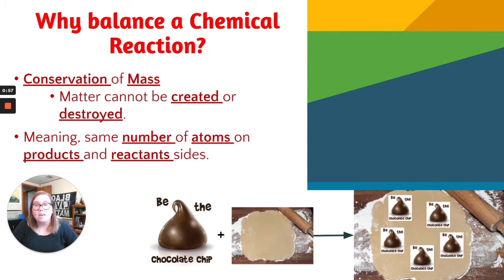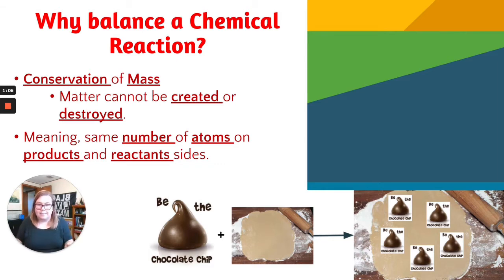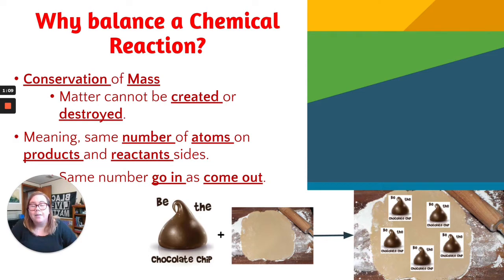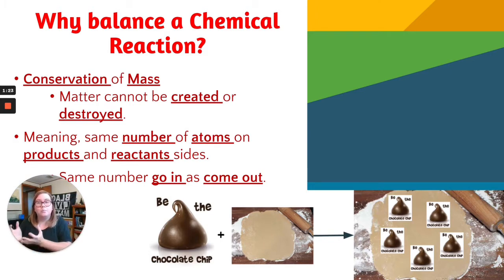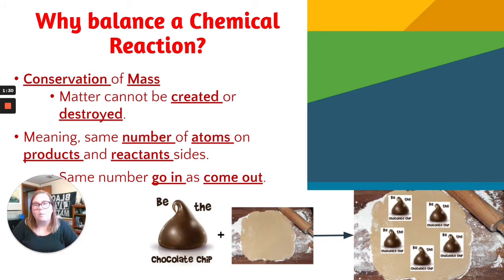So it means the same number of atoms are on the product and reactant sides — the same number of atoms go in as come out of that reaction, because nothing can be created or destroyed. So we need to balance them to identify how much of a chemical you need to put in to cause a certain reaction to happen, to get a certain amount out of that reaction. That's kind of the end goal of learning how to balance.